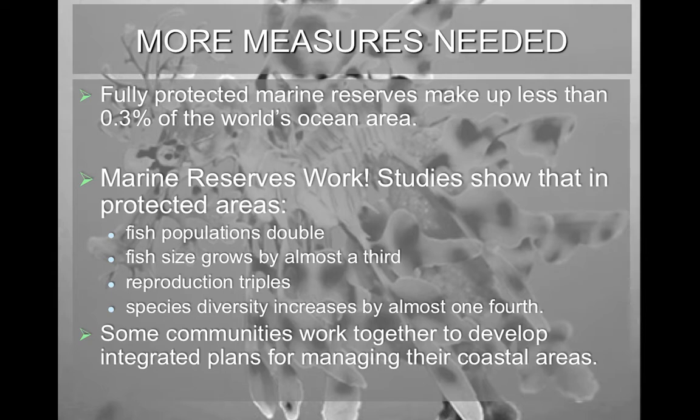More protective measures are needed. Our current protective marine reserve areas are less than 0.3% of the world's oceans. Since most organisms are migratory, they migrate in and out of these protective regions at will. However, marine reserves do work — studies show that protected areas allow fish populations to increase, sometimes double. The average fish size grows by almost a third, reproduction rates triple, and species diversity increases by a quarter. The more marine reserves we can establish, the more biodiversity we can sustain.